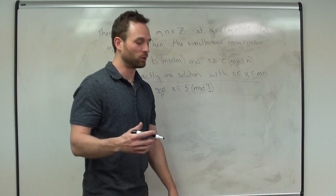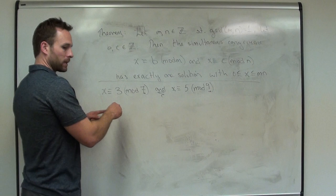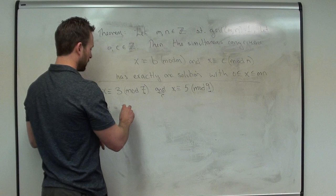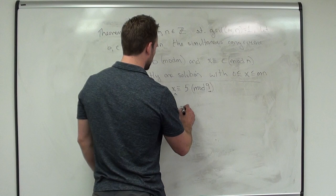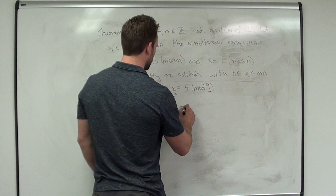Coming back over here, we're going to translate this into what it means. x congruent to 3 mod 7 means x is equal to 3 plus some multiple of 7 — that's the definition of congruent, and that should always be popping into our head. And all we're going to do is substitute this into the second congruence: 3 plus 7y congruent to 5 modulo 9.